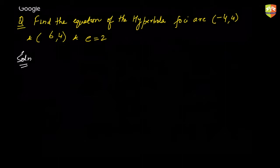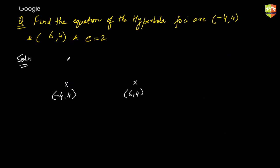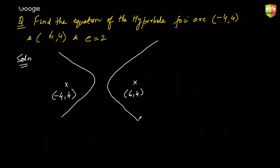First draw the diagram — everything will be very evident from there. Your foci are at (6, 4) and (-4, 4). The center of a hyperbola always lies at the midpoint of the line connecting the two foci. So the center will be the midpoint, which is (1, 4).